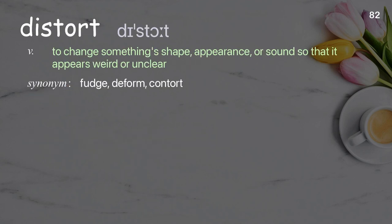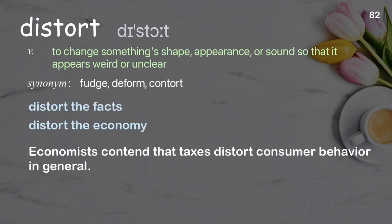Distort: to change something's shape, appearance, or sound so that it appears weird or unclear. Examples: distort the facts, distort the economy. Economists contend that taxes distort consumer behavior in general.